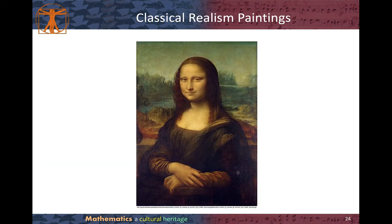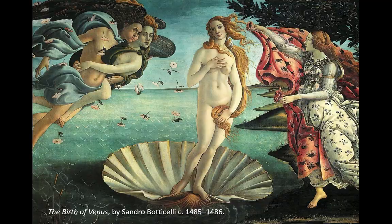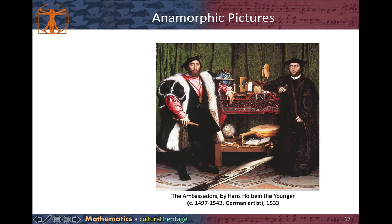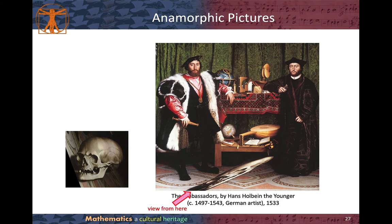Classical realism paintings include the Mona Lisa, The Birth of Venus, and The Creation of Adam. Anamorphic pictures have a distorted projection from a certain point of view, and this kind of transformation requires a mathematical operation called an affine transformation. The Ambassadors, painted by Hans Holbein the Younger, is one of the most famous anamorphic pictures. If you view it from the bottom, you can see the image of a human skull, symbolizing death. There are different interpretations of this anamorphic picture, but there are basically two types of anamorphic pictures.